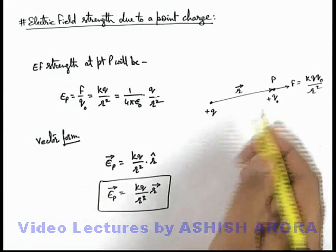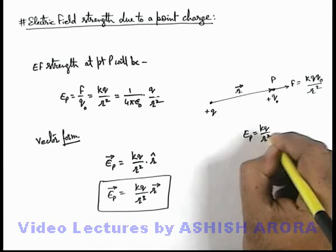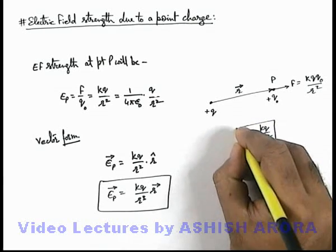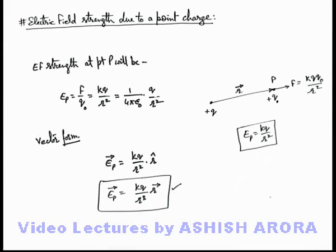But keep in mind that the magnitude of electric field at point P is given by kq/r², which is the most common and useful relation. For the vector form, you can use this one.